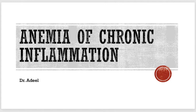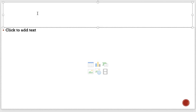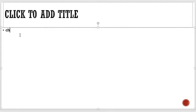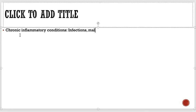As you can see, the next topic is anemia of chronic inflammation. When discussing this, you must first know what chronic inflammatory conditions are. There are many conditions which run chronically in the body — for example, any type of infection running chronically, and malignancies are chronic conditions as well.